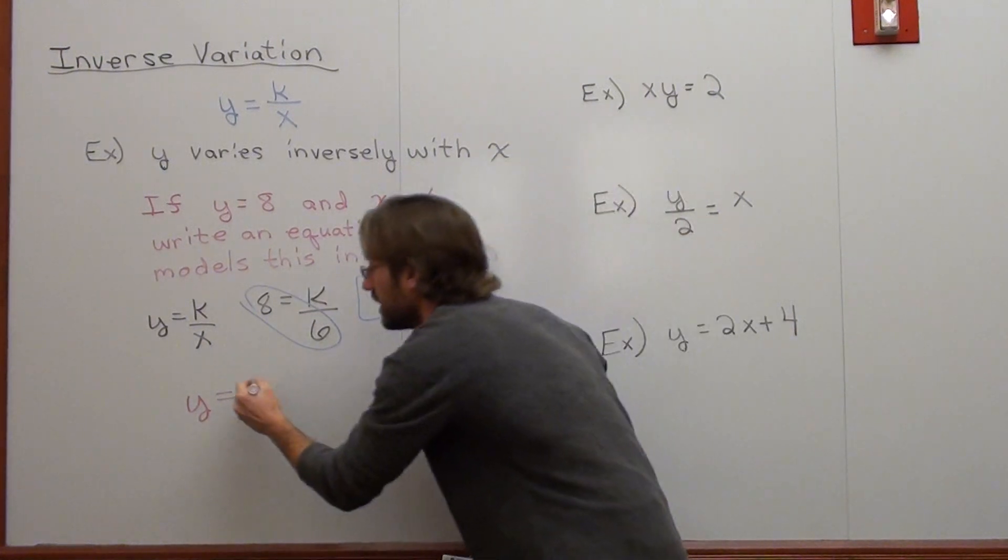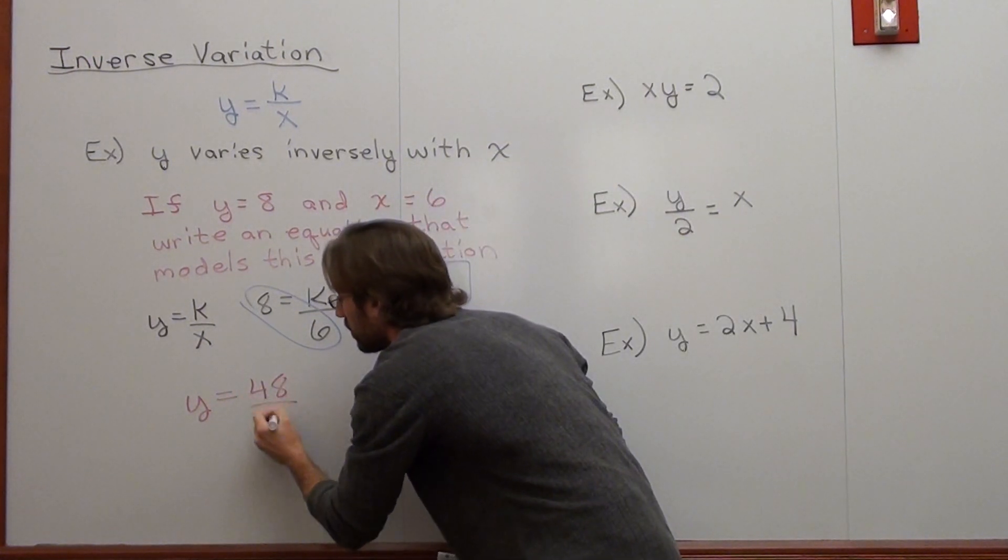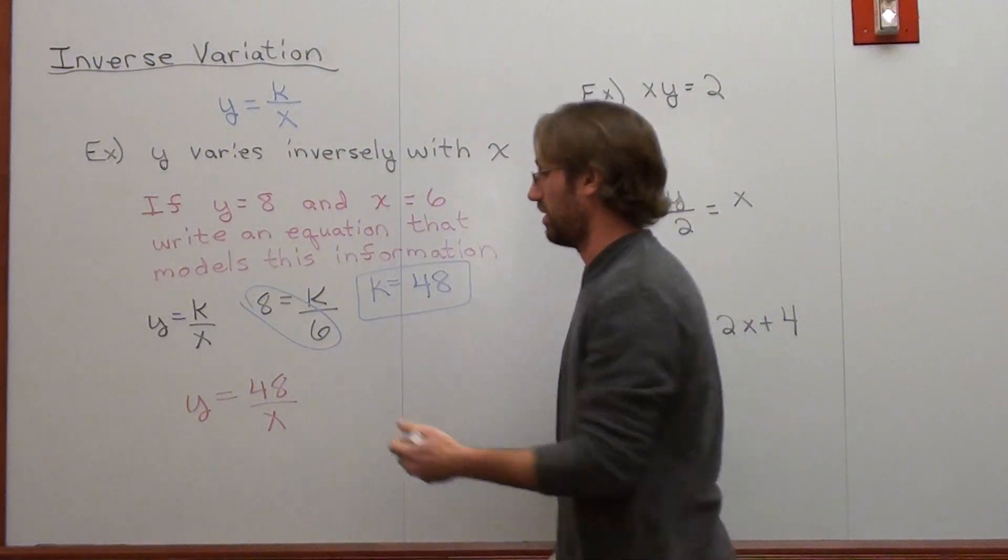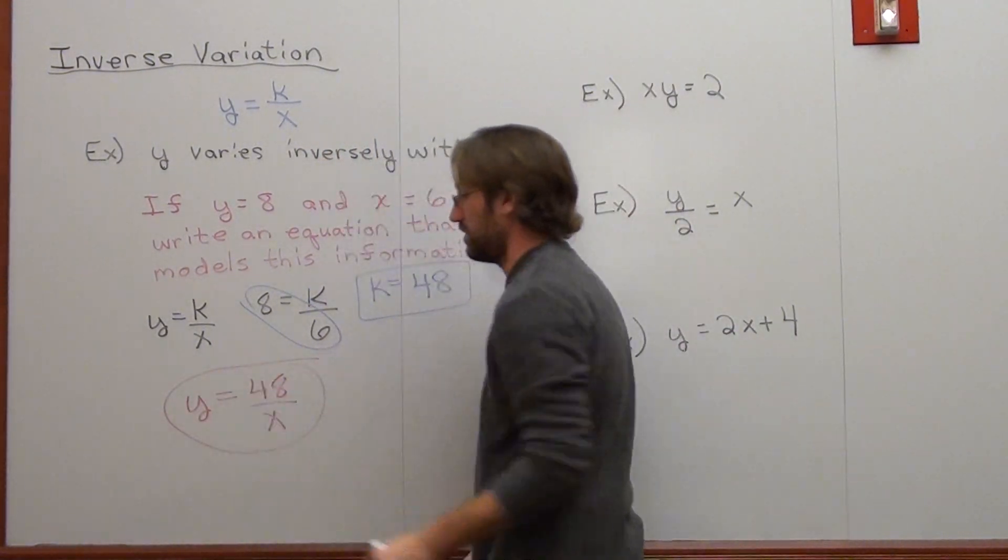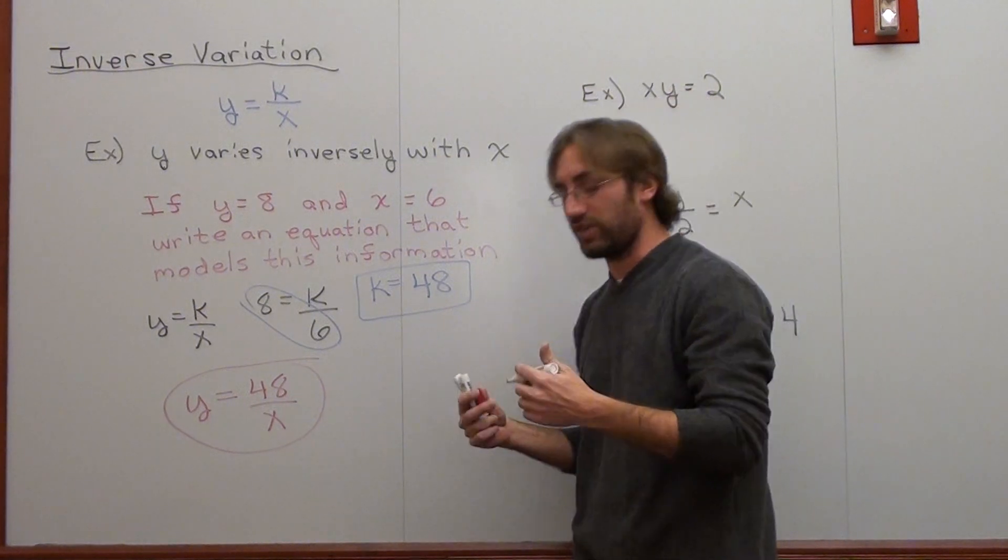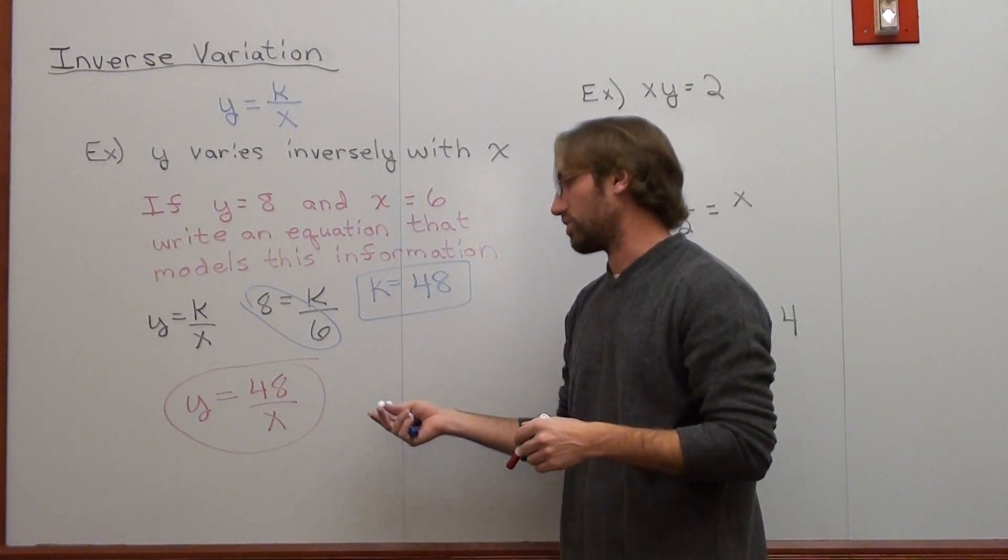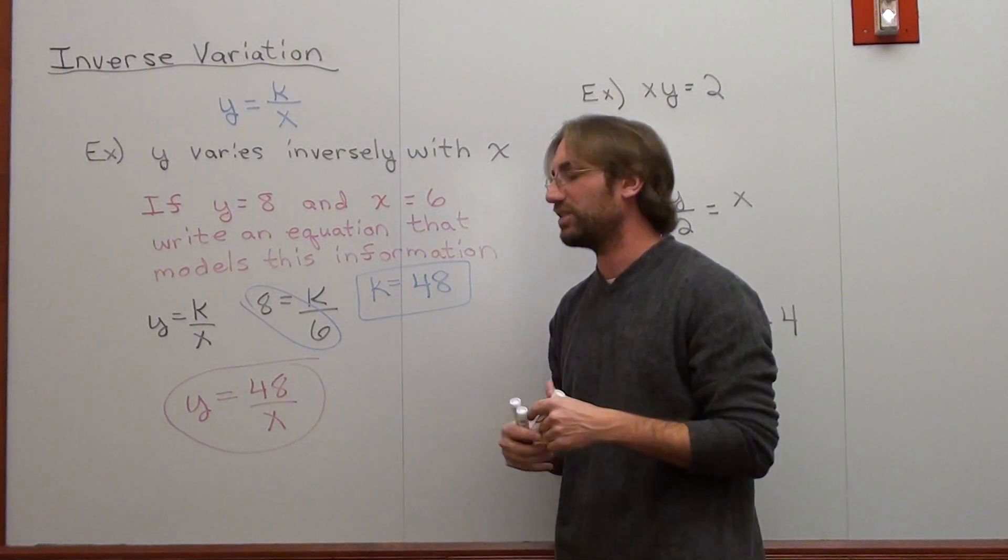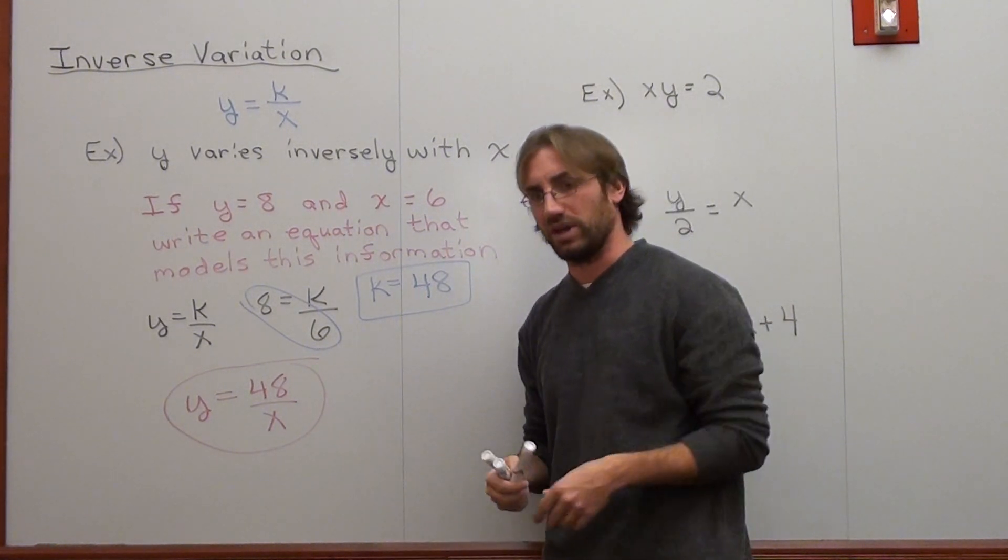y equals, my k is 48, over x. All I'm really doing is substituting to figure out what the k is. And once I do that, I'm done. And that's an example of an inverse variation type problem. So an inverse function, I suppose, depending on the domain itself. But we'll just go with variation for right now.